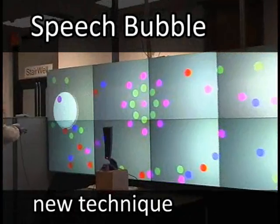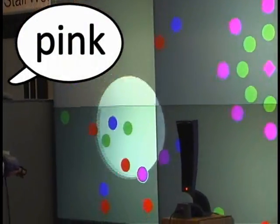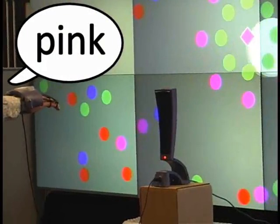Speech bubble allows one to filter the selection space based on a speech command. For example, saying the color of the target filters the bubble ray to select the nearest target of that color. Red.